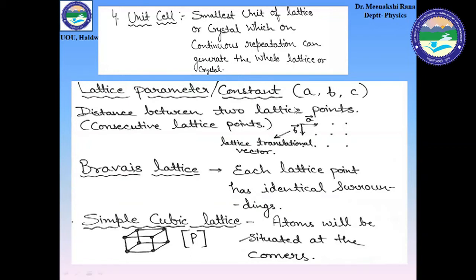Here, the distance between two consecutive lattice points is 'a', so 'a' is defined as a lattice parameter, also known as lattice constant. Similarly, the distance between two lattice points 'b' is also known as the lattice parameter or lattice constant. The vectors a and b are also known as lattice translation vectors.